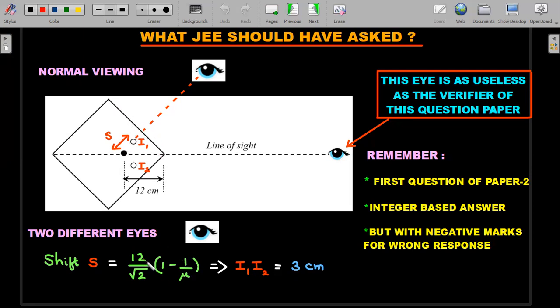This makes it a simple paraxial ray situation where if this is 12, this would have been 12 by root 2 depth from this surface. The shift would have been 12 by root 2 times 1 minus 1 by mu. Then which are two images for two different eyes. My initial guess is this is what they would have wanted to ask in the integer-based question.